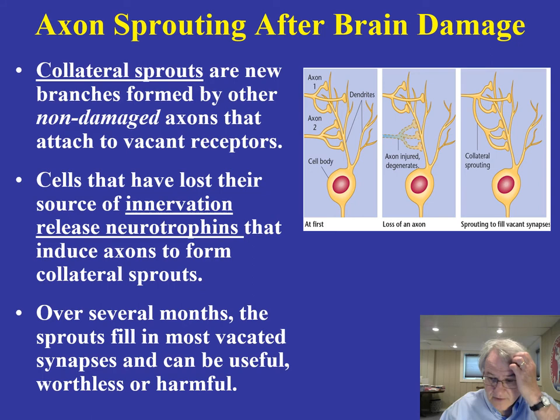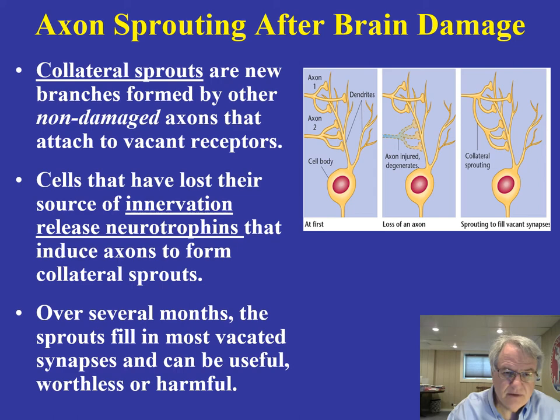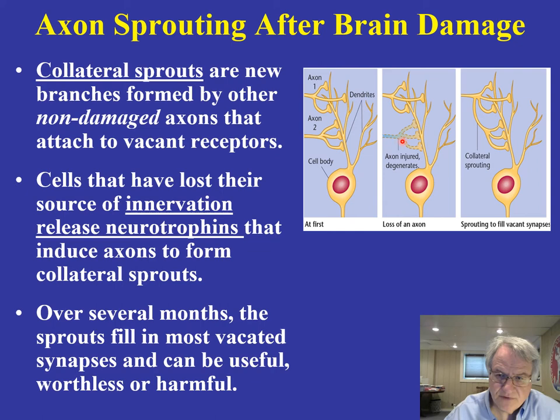Let me talk about axon sprouting — this is an important concept. One of the things that happens when the brain is damaged is that collateral sprouts eventually begin to form. After an injury, you're seeing degeneration of certain axons, as shown here in this case of degeneration taking place.